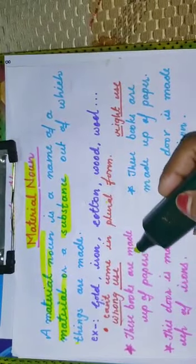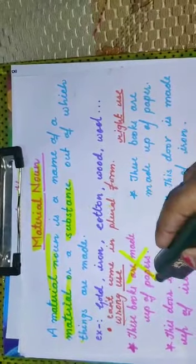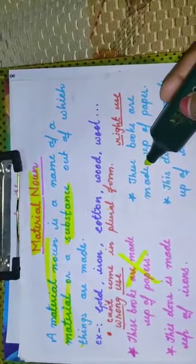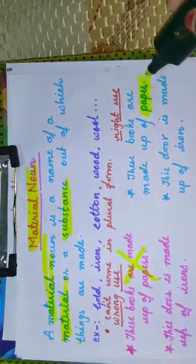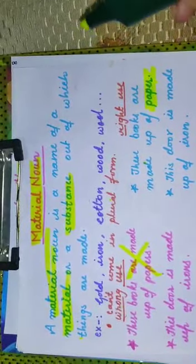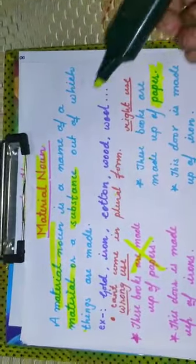Example: these books are made up of papers is wrong. The right sentence is these books are made up of paper. We can only use singular form of material noun. We can't use plural form of material noun.